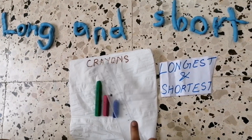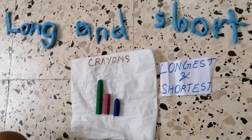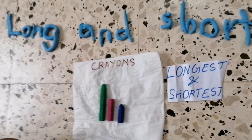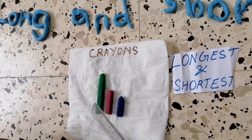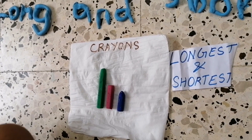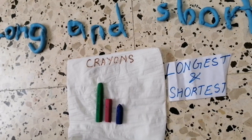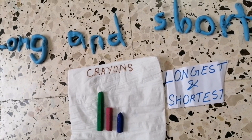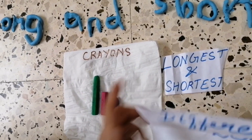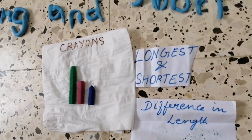Next, with crayons. I have three crayons. Which is the longest? Yes, this is the longest. Which is the shortest? Yes, this is the shortest — blue color. What do you understand? Again, difference in length.